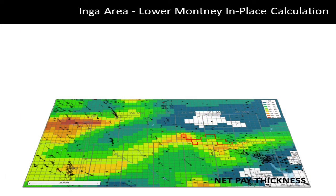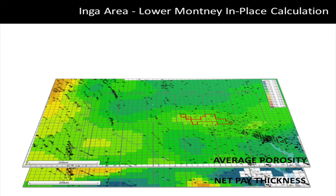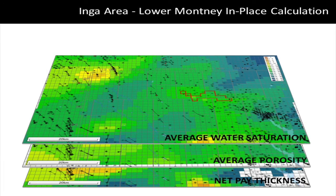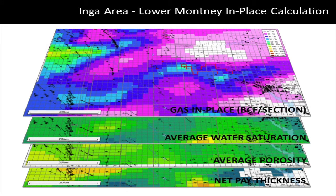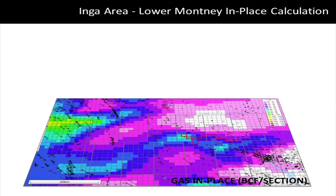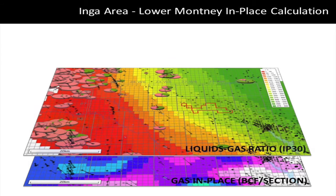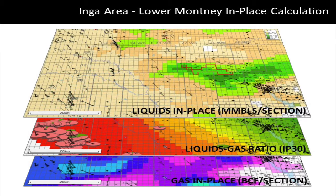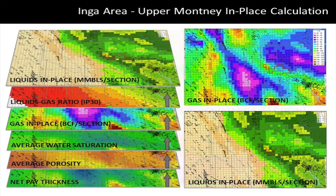With all of those calculated zone attributes we're going to start building our hydrocarbon in-place interpretation for each of our zones. Taking the lower Montney first: we have our mapped net pay thickness, our calculated average porosity from zone attribute calculations, and average water saturation — from that we can calculate a gas-in-place map in BCF per section. We then add our liquids-gas ratio map, created from existing production data, to derive our liquids-in-place map for the lower Montney.